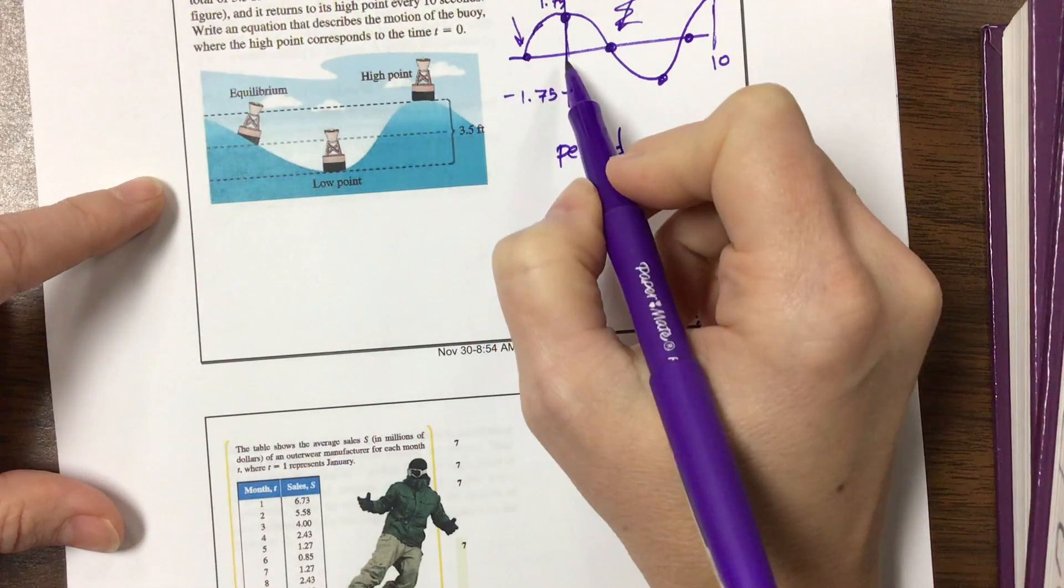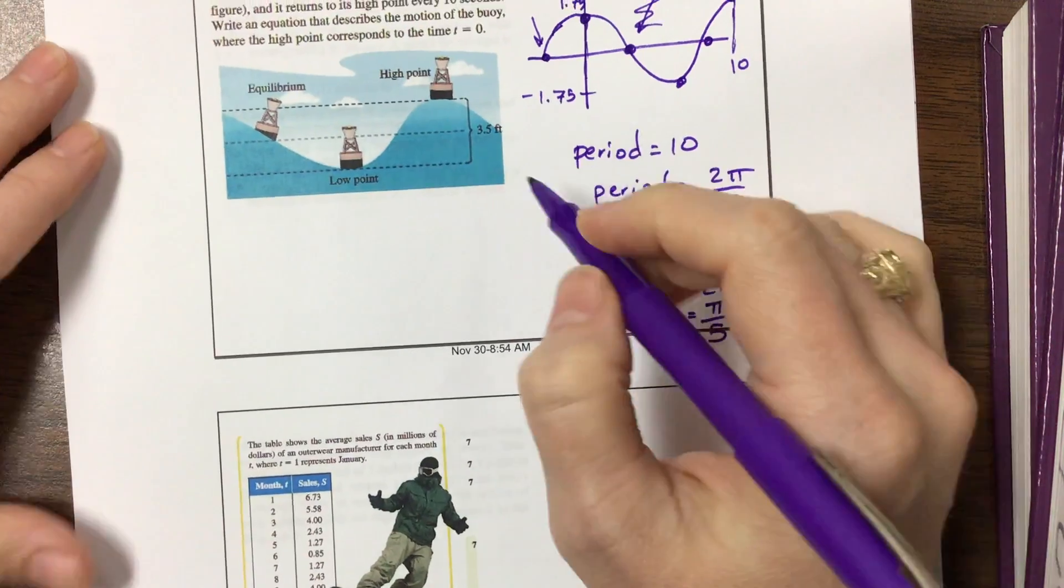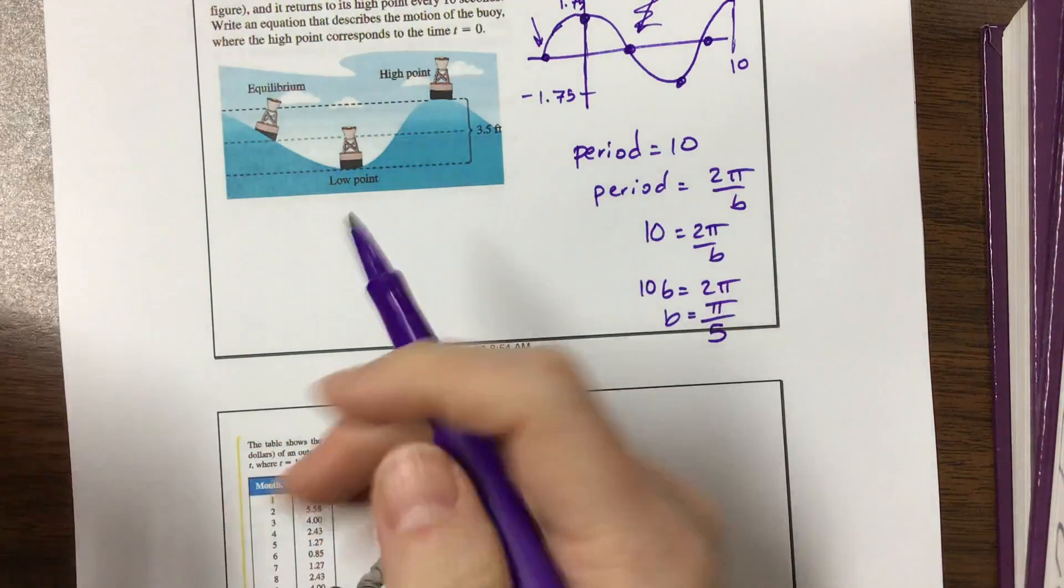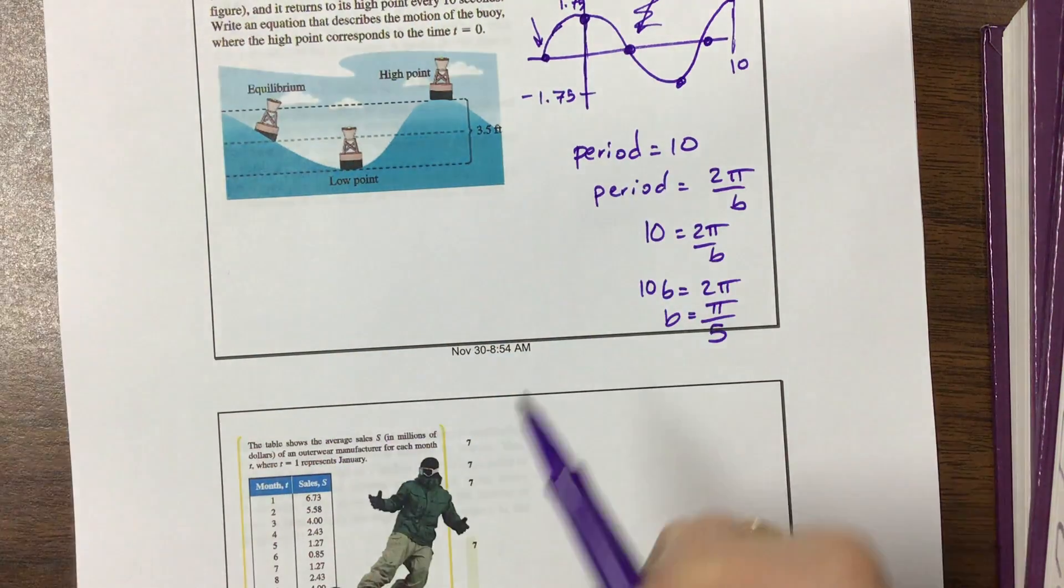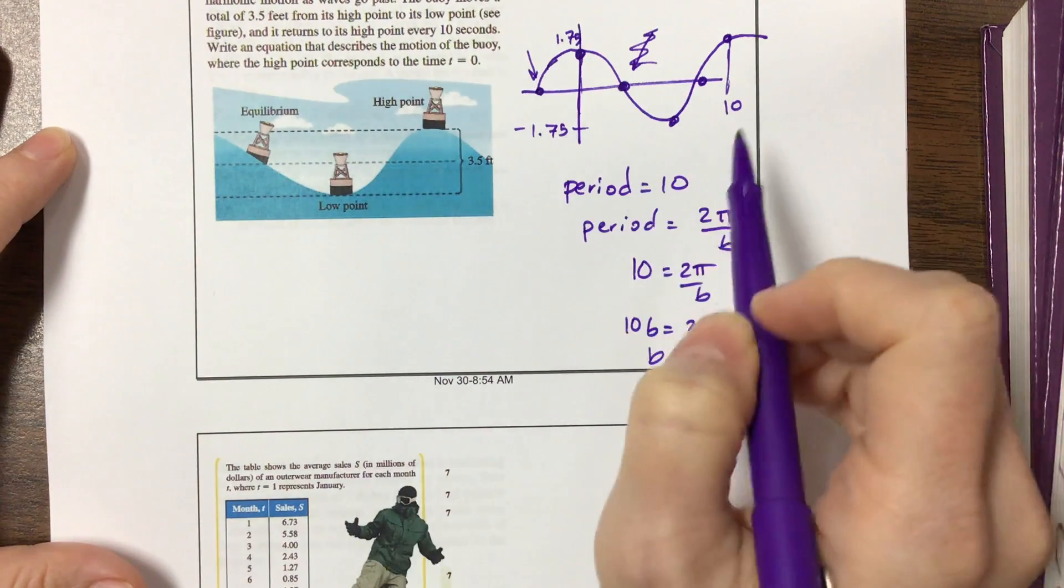They don't tell us where we're starting, or we could shift this up and down left and right. They're just saying write an equation. There are many ways to interpret it, and what I'd be looking for is does your equation match the graph that you give?